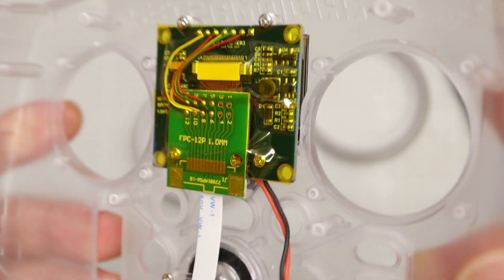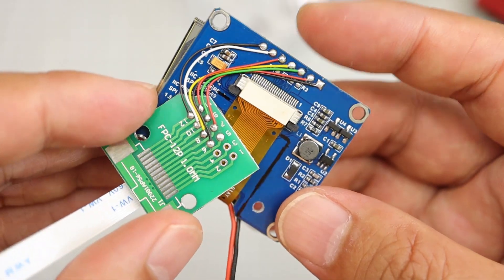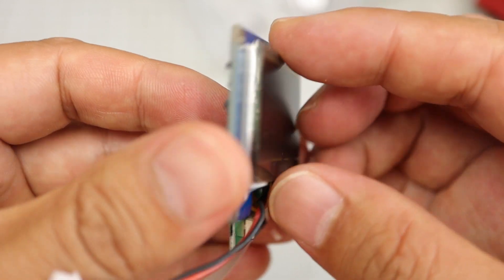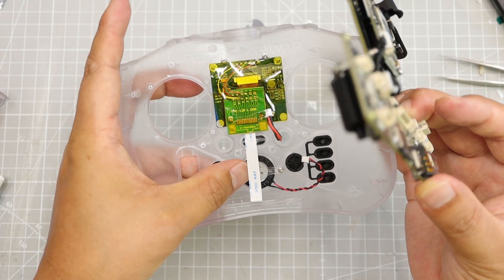Add some Kapton tapes for insulation. For reference, the detached module is shown. It's time to assemble.